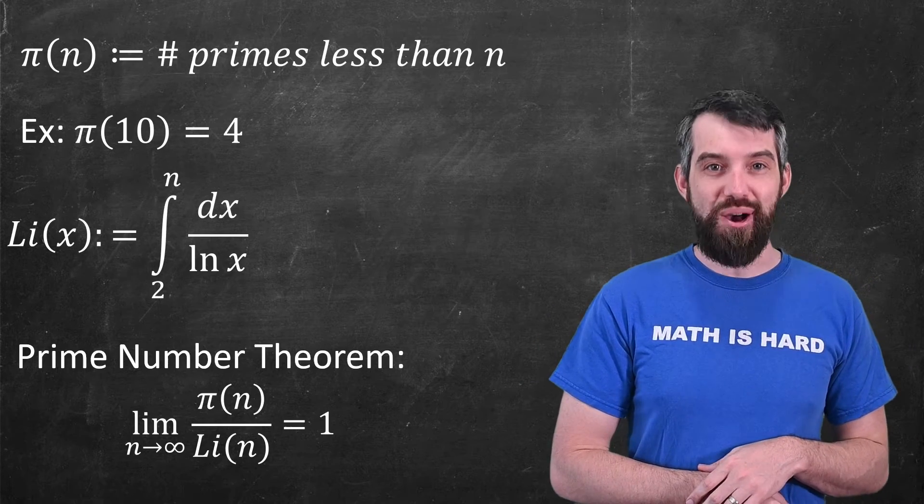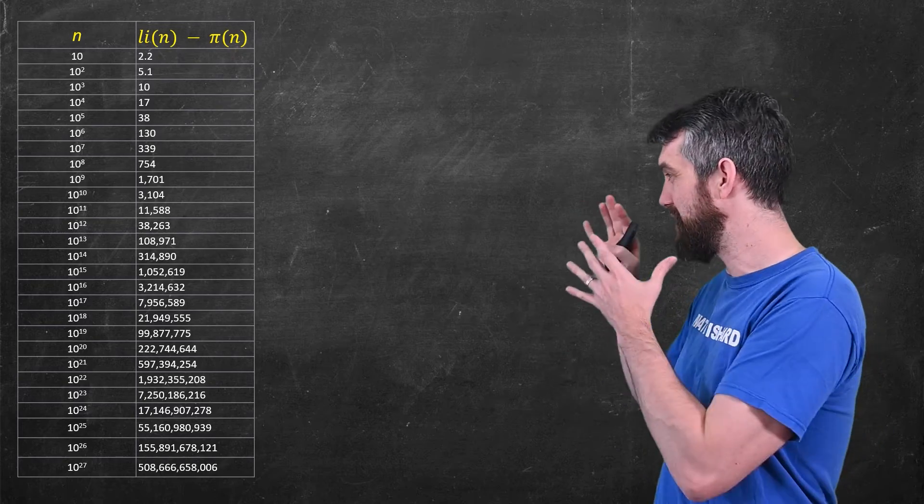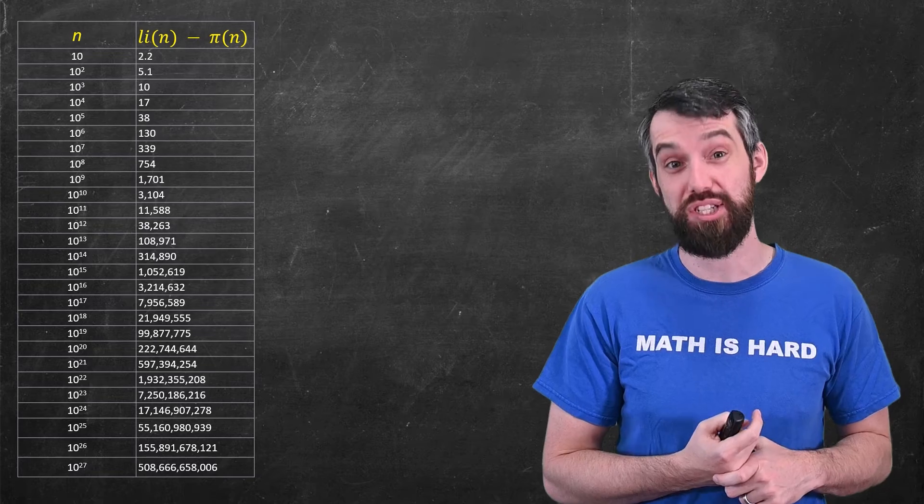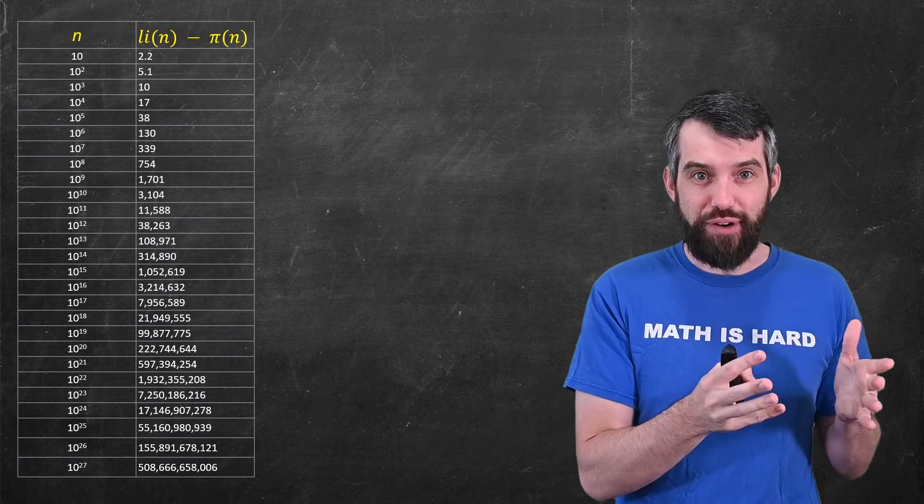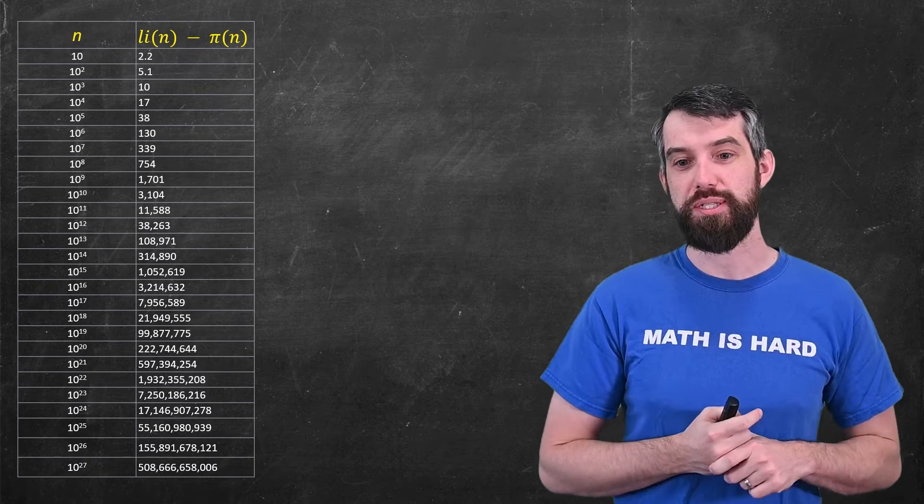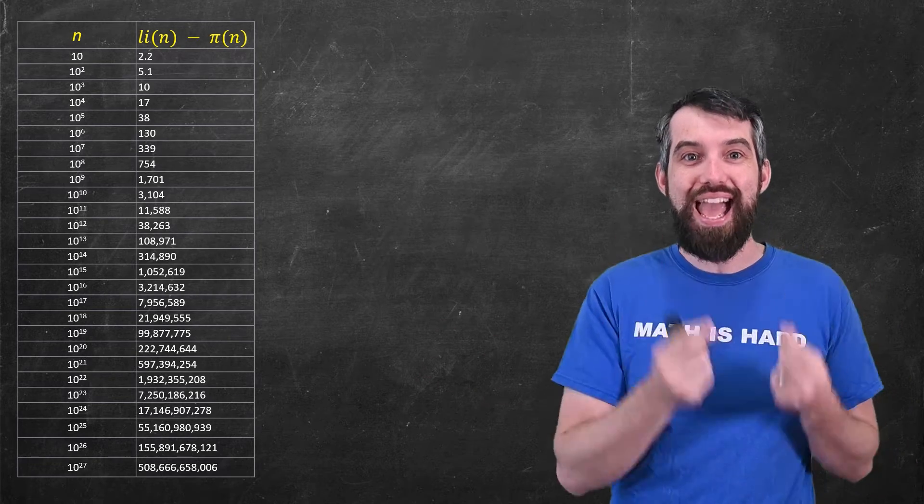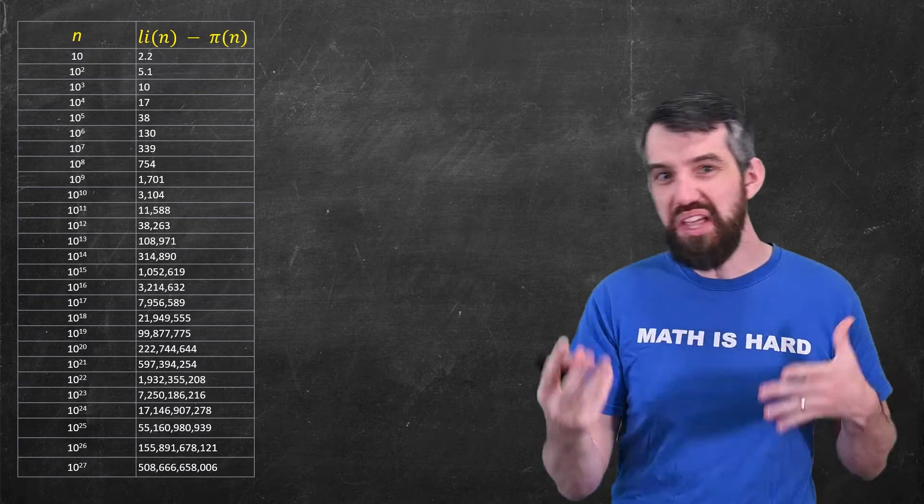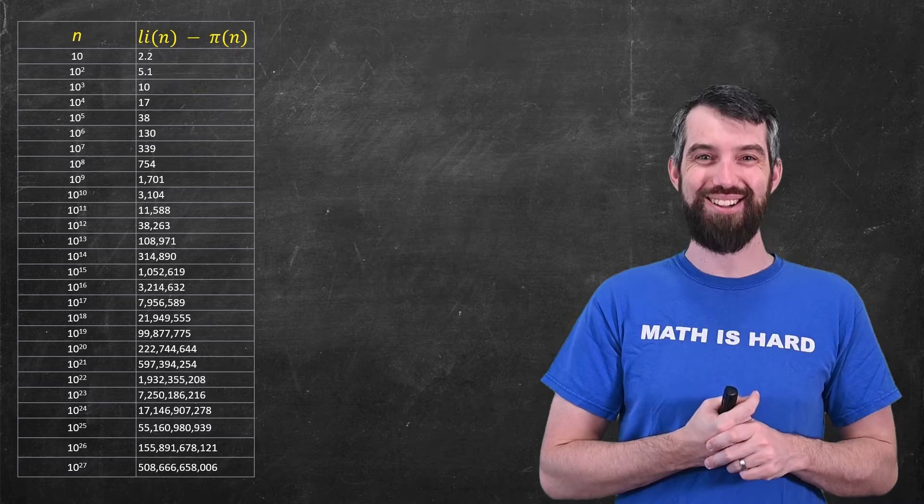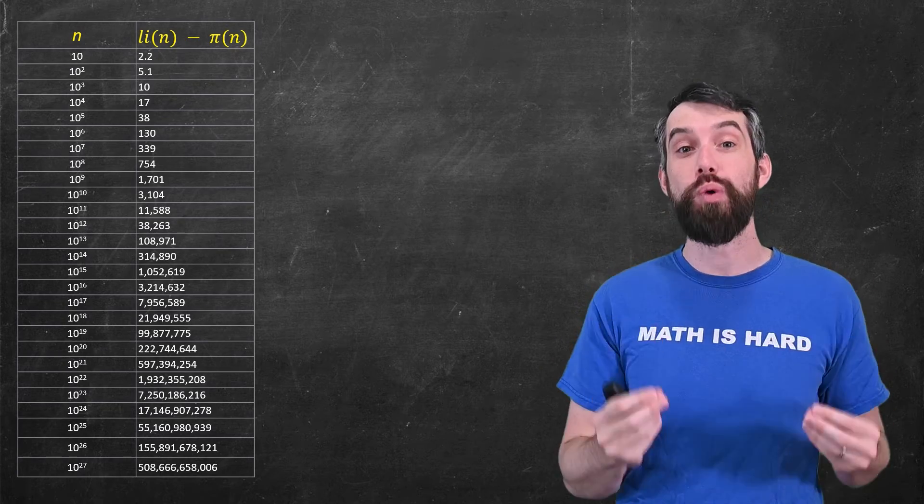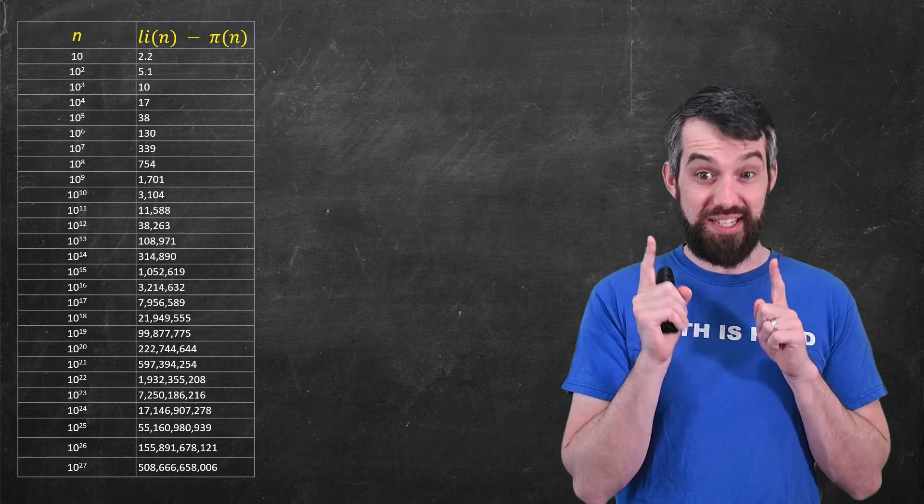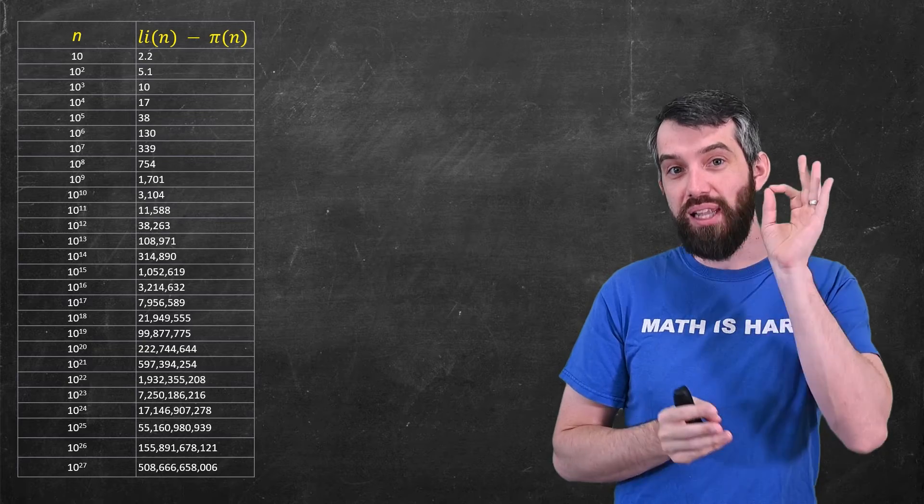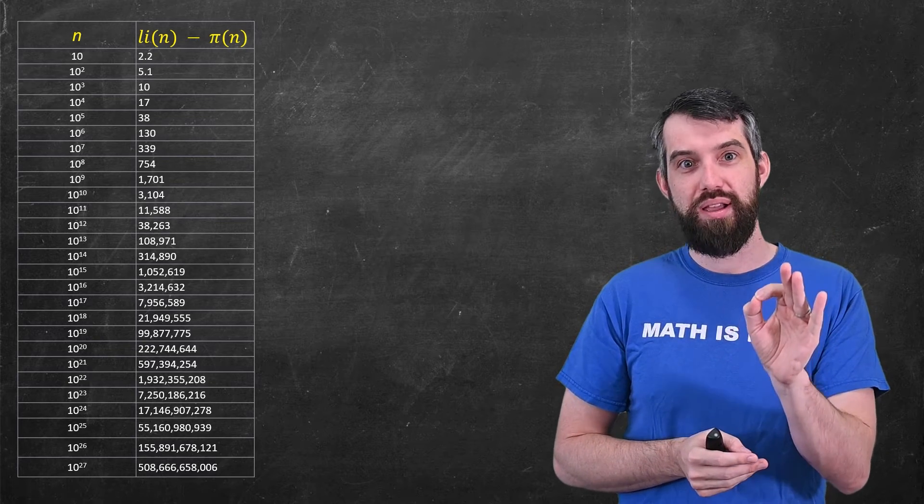Indeed, if you want to look at a table of values here, this table shows n from 10 all the way up to 10 to the 27, an outrageously large value of n, and it looks at the difference between these two different functions. And what you'll notice is that even for the bottom row, even for 10 to the 27, this outrageously large number, the difference between them is only about 500 billion. I mean, 500 billion sounds like a lot, but in comparison to the 10 to the 27, it really isn't. Notice that the difference is always positive. For all of these values, from 10 up to 10 to the 27, li of n is bigger than pi of n.